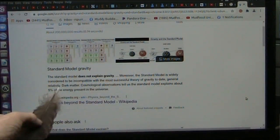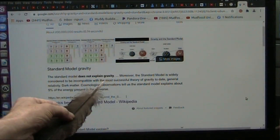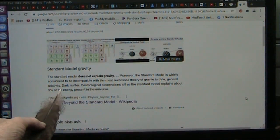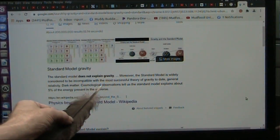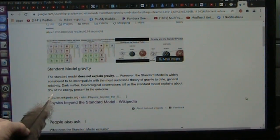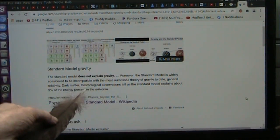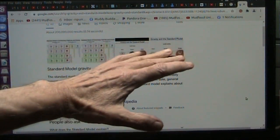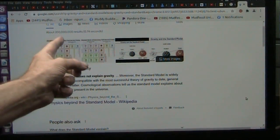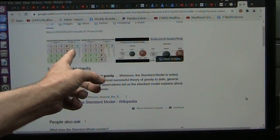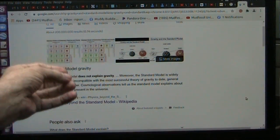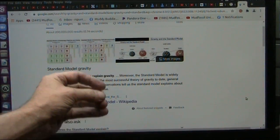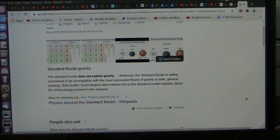Moreover, the standard model widely considered to be incompatible with the most successful theory of gravity to date, general relativity, which is not correct. Dark matter, they don't understand that either. Cosmological observations tell us the standard model explains about 5% of the energy present in the universe. It really is totally insufficient because they want to get to the smallest particles that exist, and I will show you those, because if we can get them out of light and see the particles in light, I would say that's about as small as you're going to get.